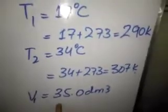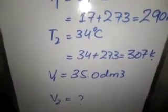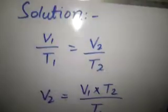V1 is 35.0 decimeter cube. We will keep it at 35.0 and then we will find out the value of V2.